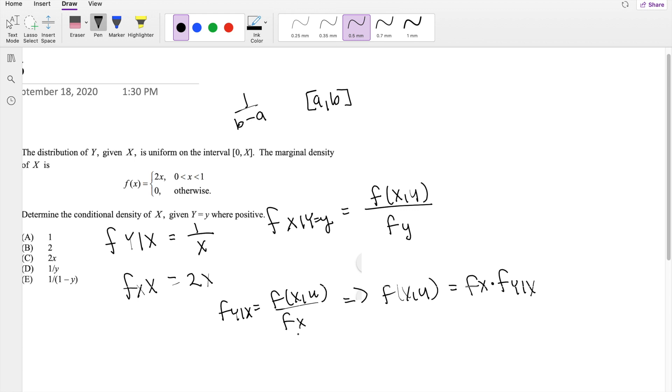Do you agree with that? Because I just multiply this thing to the other side. Okay, so then this is equal to f(x), which is 2x, times f(y|x), which is 1/x. So then the joint distribution function is equal to 2.